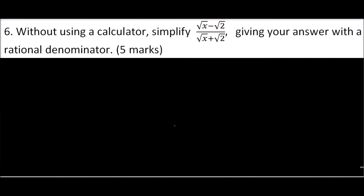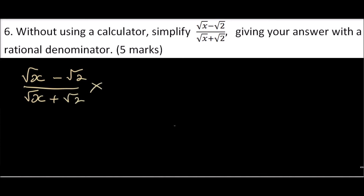The second question: without using a calculator, simplify (√x − √2) / (√x + √2), giving your answer with a rational denominator. This means we need to remove the surds from the denominator. We call this rationalizing the denominator. We multiply by the conjugate, which is (√x − √2).